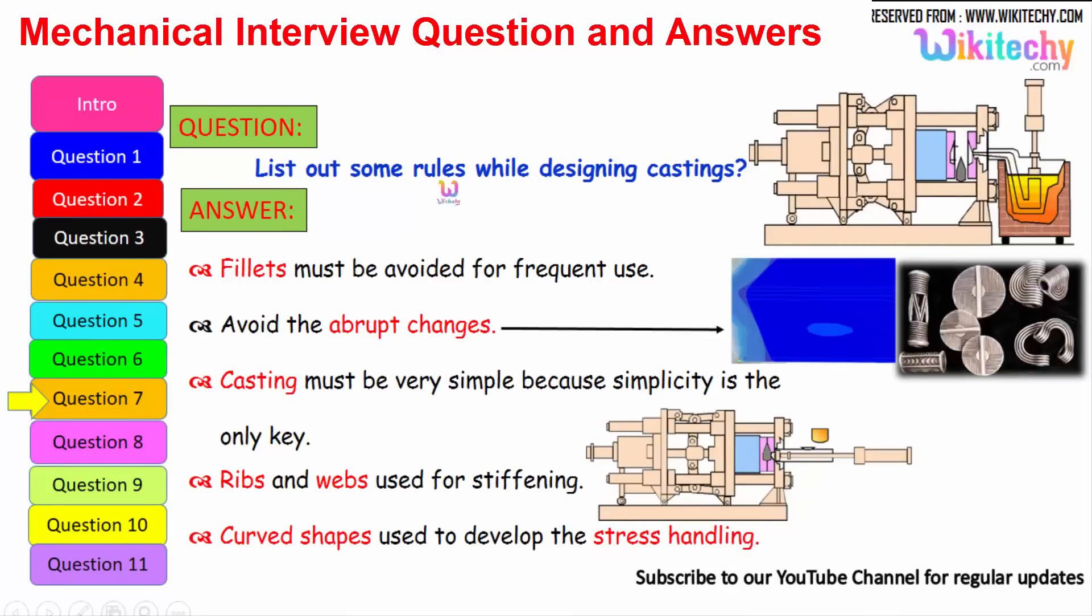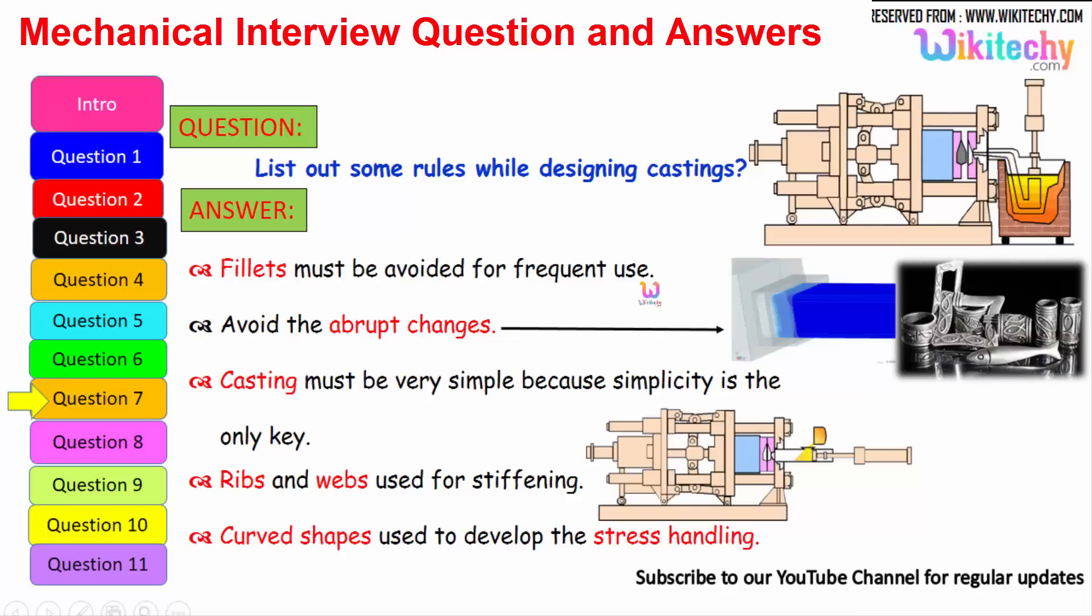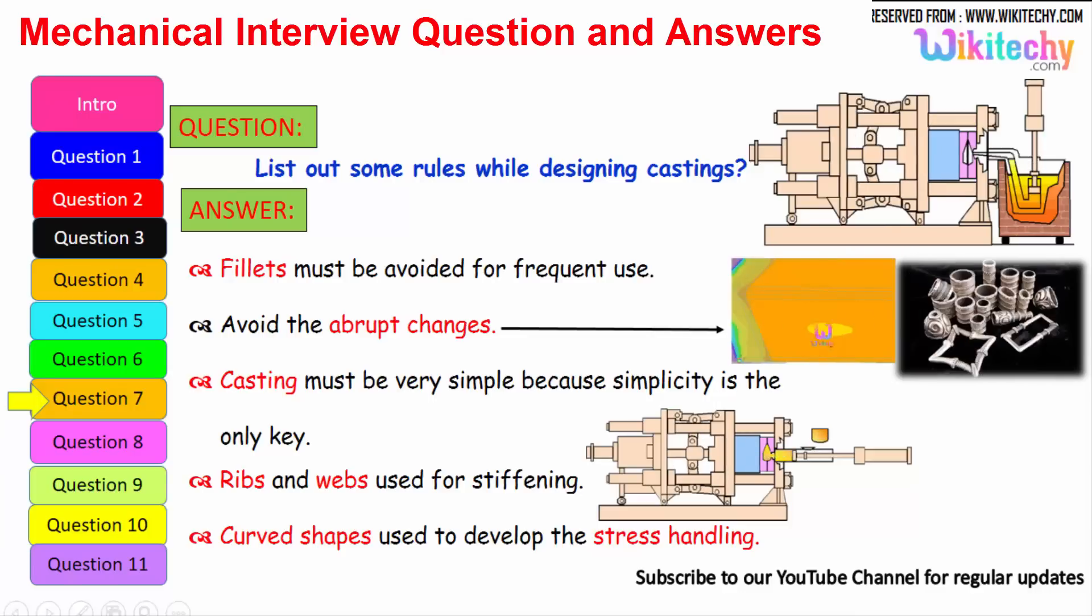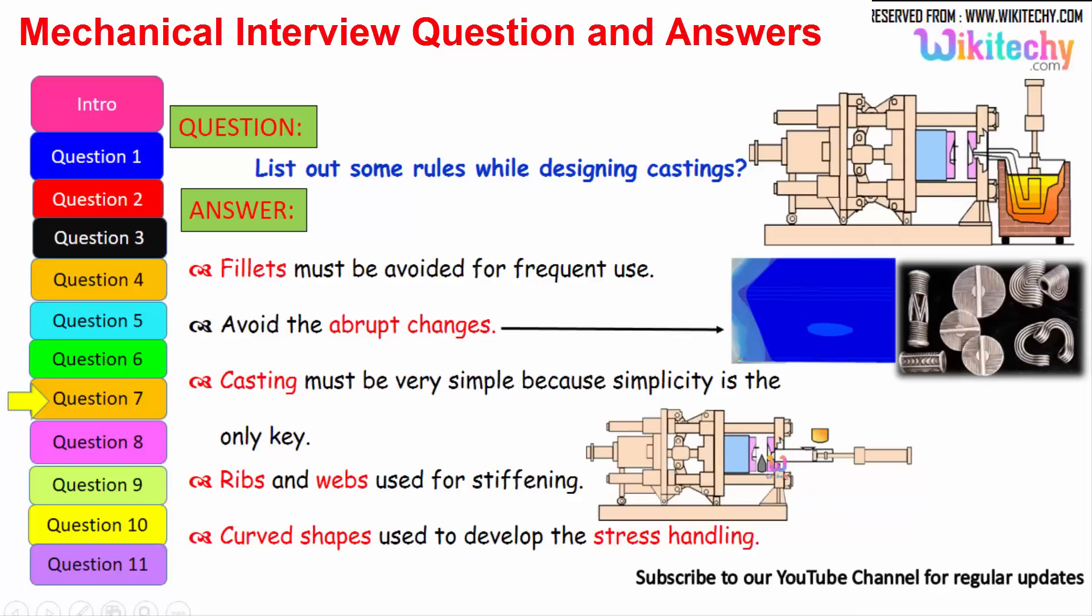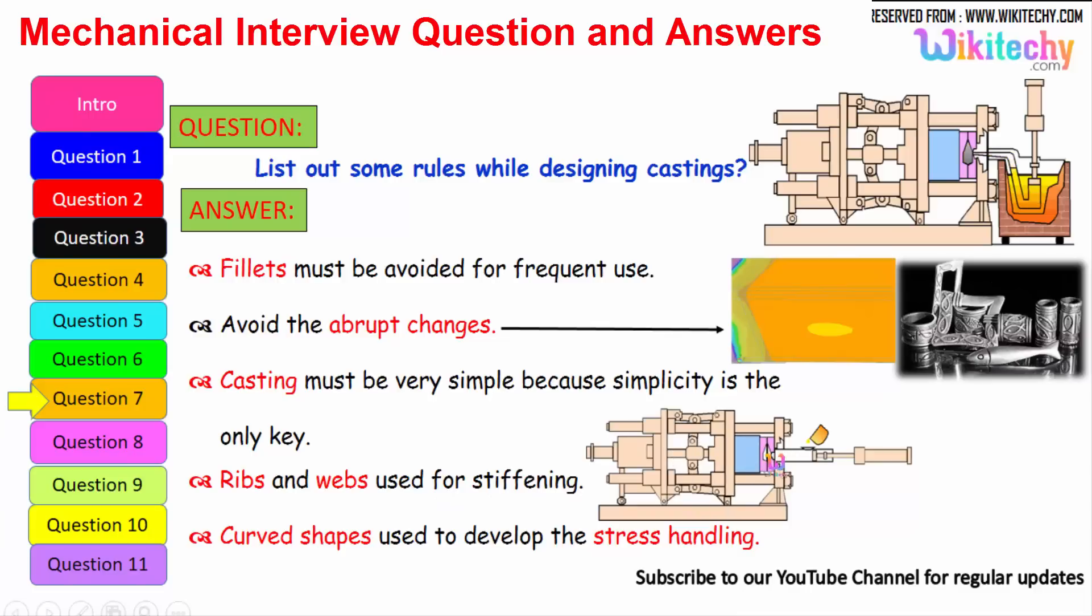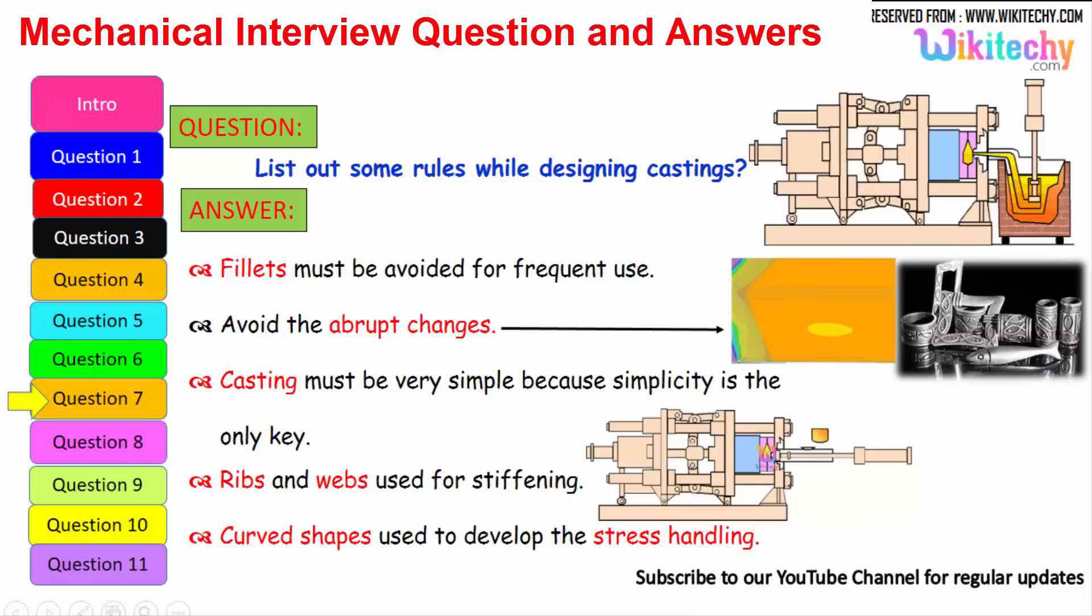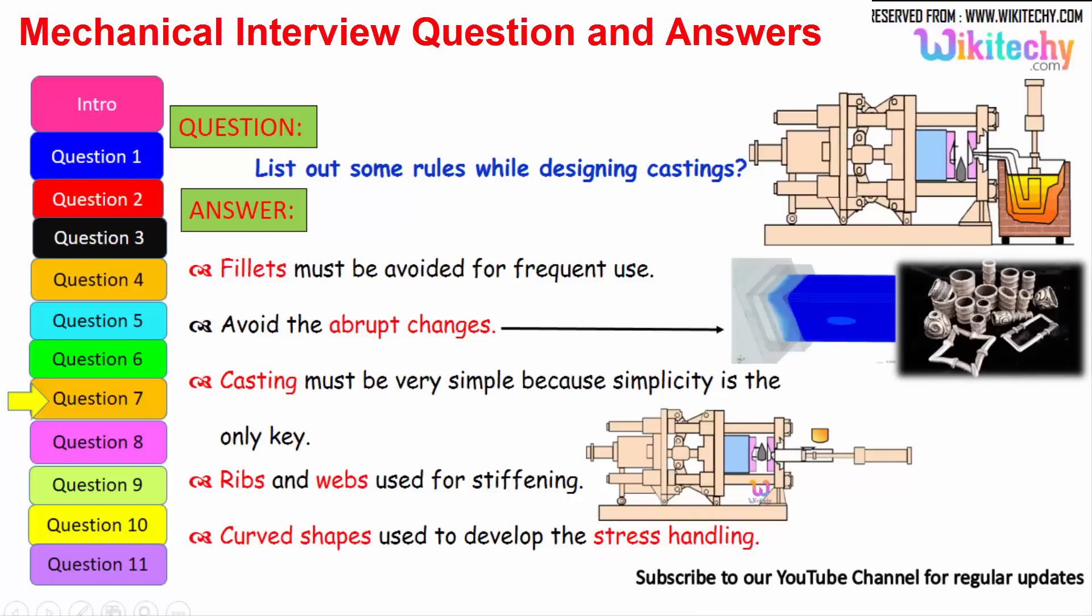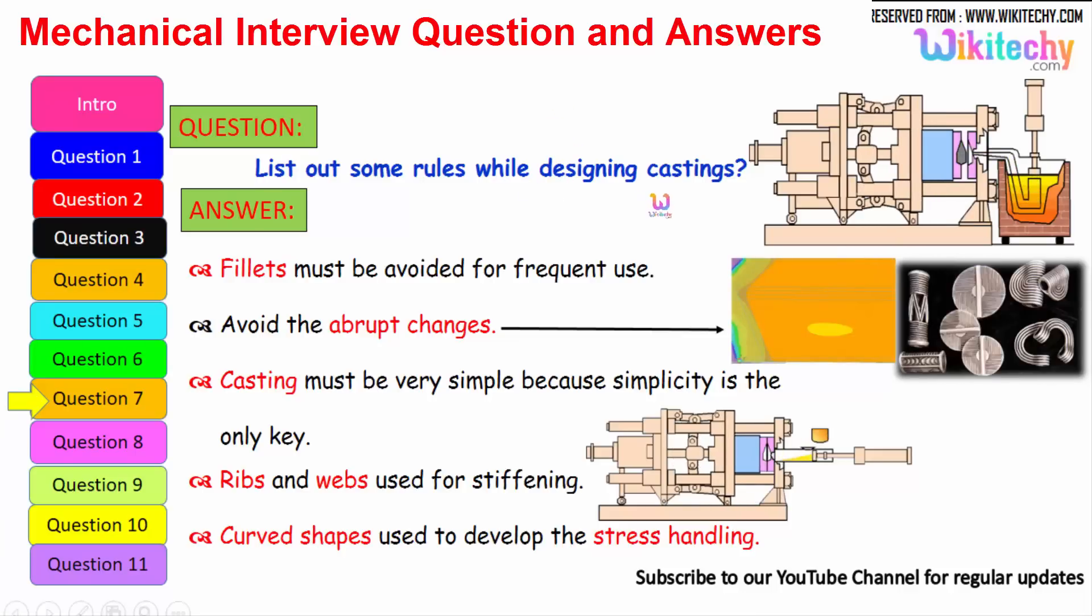Let us see some of the rules while designing casting. Fillets must be avoided for frequent use. That is the first one. Avoid the abrupt changes. It should not change. Casting must be very simple because simplicity is the only key. Ribs and webs used for stiffening. You should have the ribs. The curved shape should be used to develop the stress handling. It should be a curved shape to avoid the stress handling. These are some of the rules which we have to follow for castings.